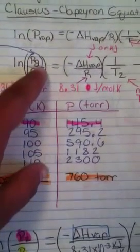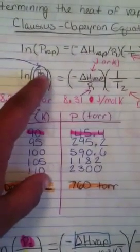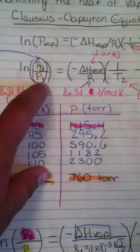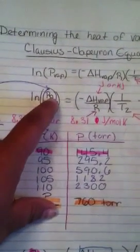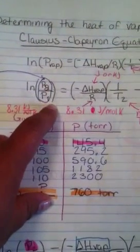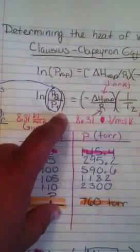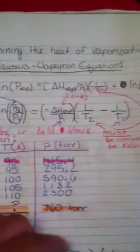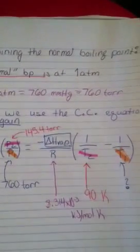But both pressures have to be in the same thing. So P2 has to be in torr if P1 is in torr, and P2 can be in millimeters of mercury as long as P1 is in millimeters of mercury, and so forth. So you guys can just determine that yourselves based off what it asks for.